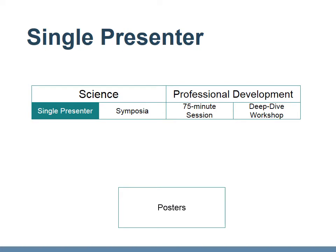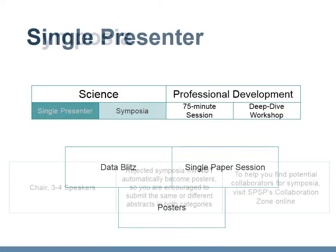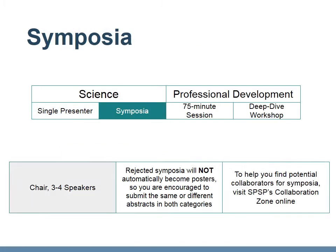Single presenter submissions will all be considered for posters, while the most excellent submissions may be elevated to a data blitz or a symposium of single papers. Symposia must include a chair and three to four speakers. Note that rejected symposia talks will not automatically become posters, so you are encouraged to submit the same or different abstracts in both categories.